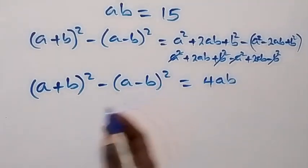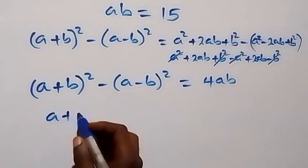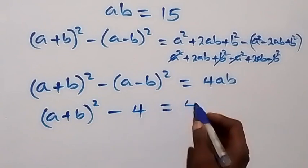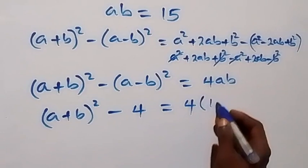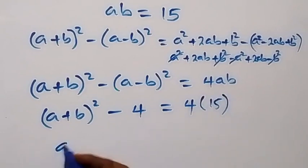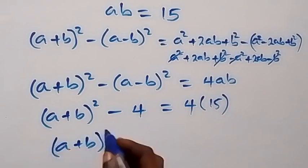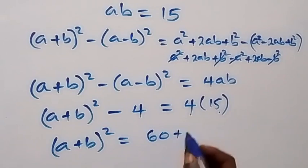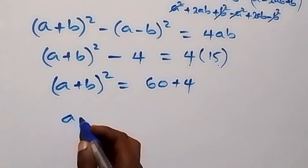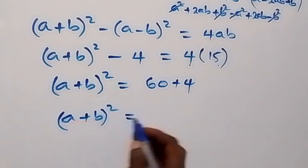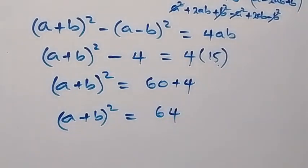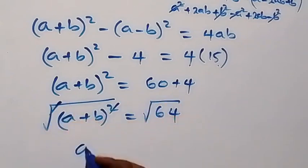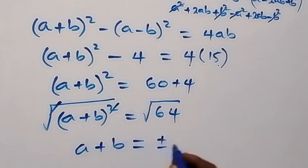Since A minus B is 2, we have (A plus B) squared minus 2 squared equals 4AB. That is (A plus B) squared minus 4 equals 4 times 15, which is 60. So (A plus B) squared equals 60 plus 4, equals 64. Taking the square root of both sides, A plus B equals plus or minus 8.